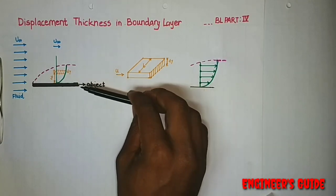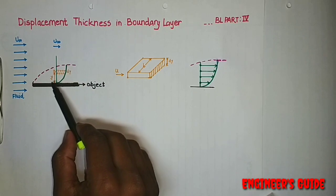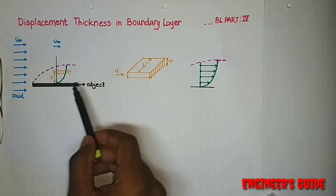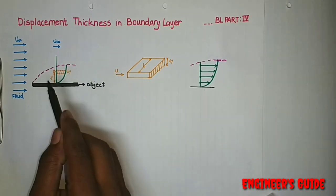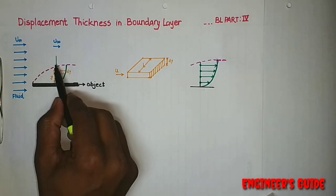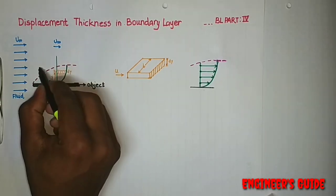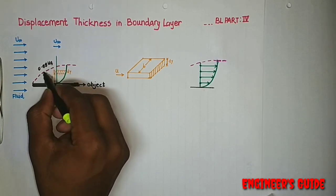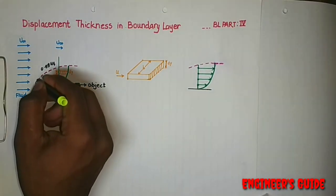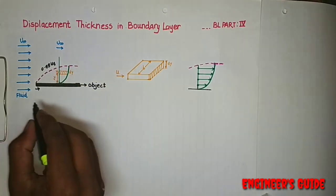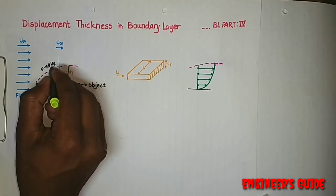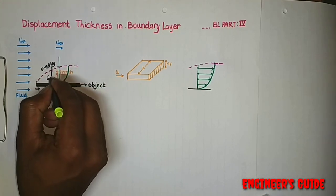As we know that when an object is moving through a fluid, a region of velocity variation is created on the surface of the object. That is nothing but the boundary layer, as we discussed in the previous parts. We also discussed that the boundary layer thickness is a distance measured from the surface to the point of the fluid where velocity is 0.99 of u infinity. This distance is called the boundary layer thickness. As x changes, the boundary layer thickness also changes. This is the delta boundary layer thickness.